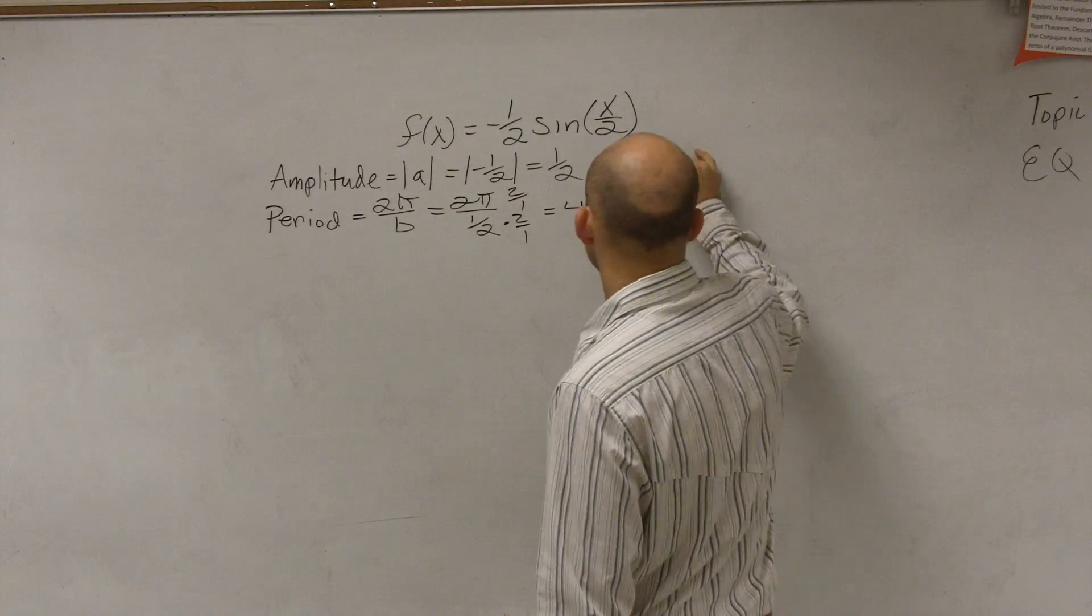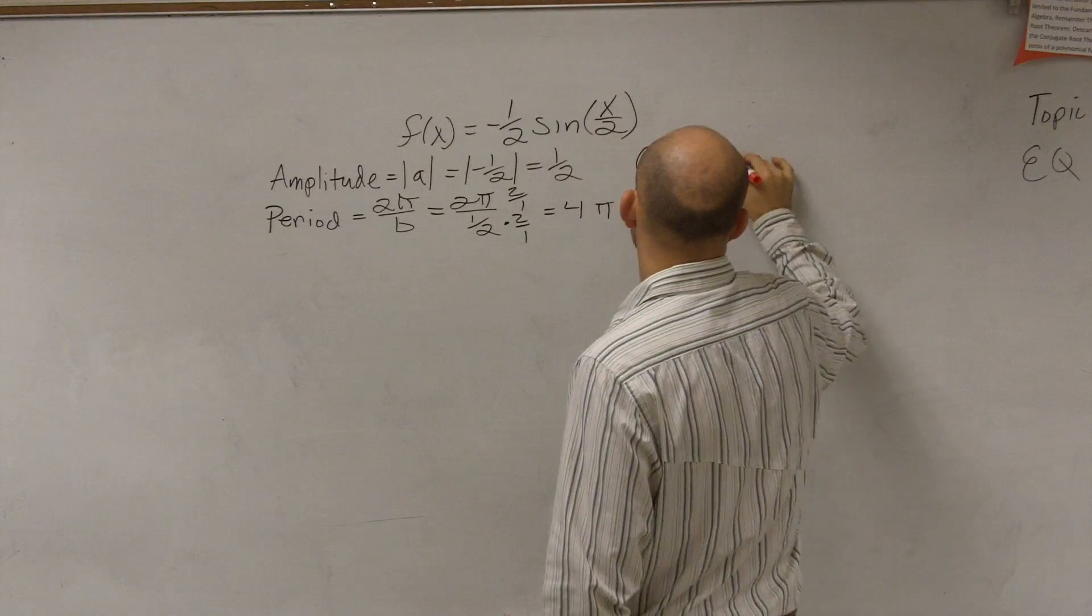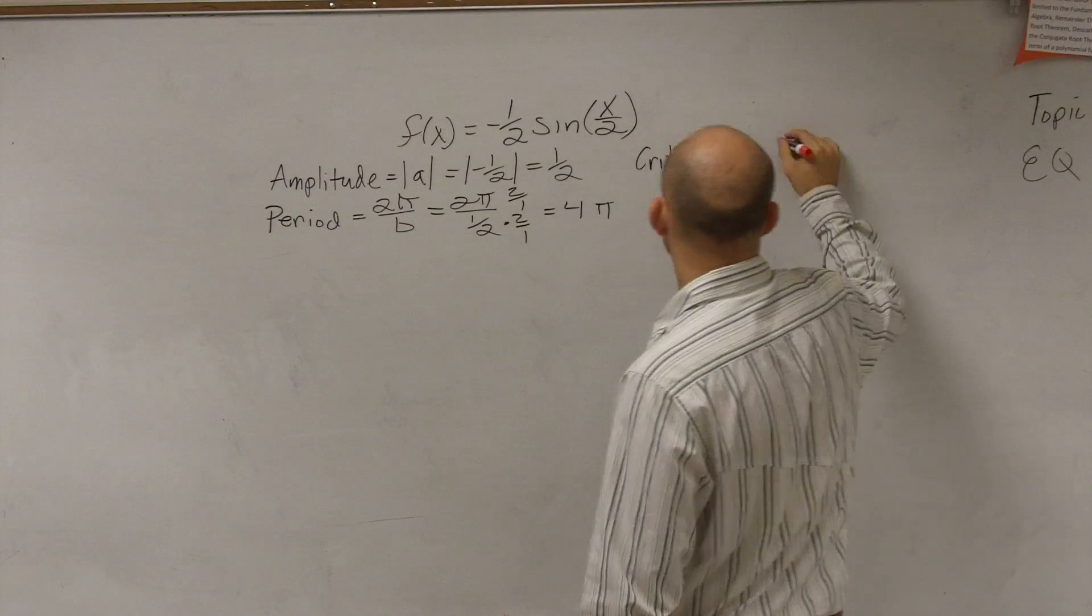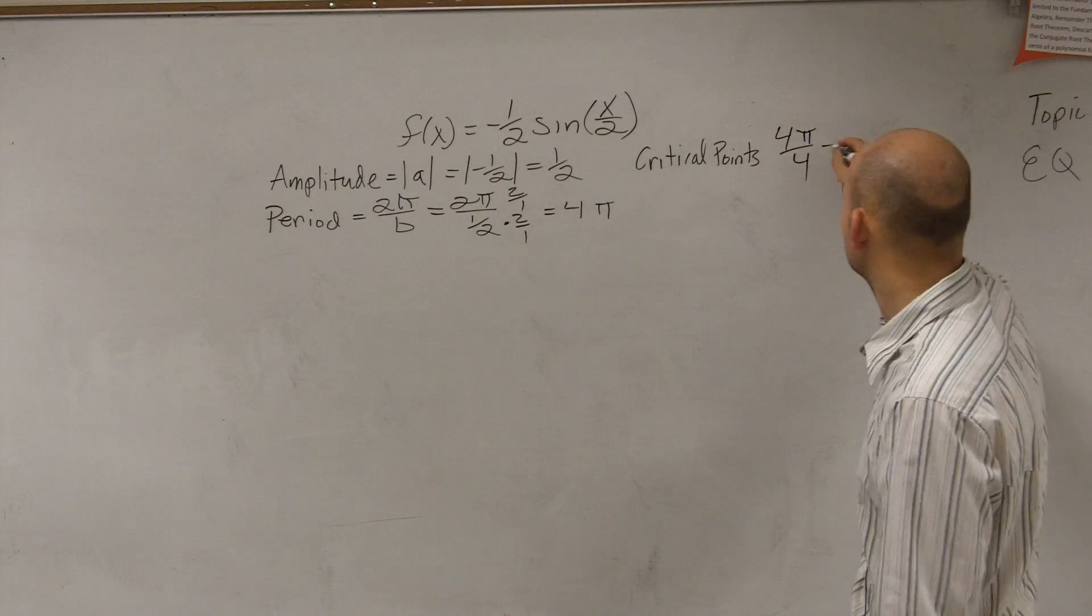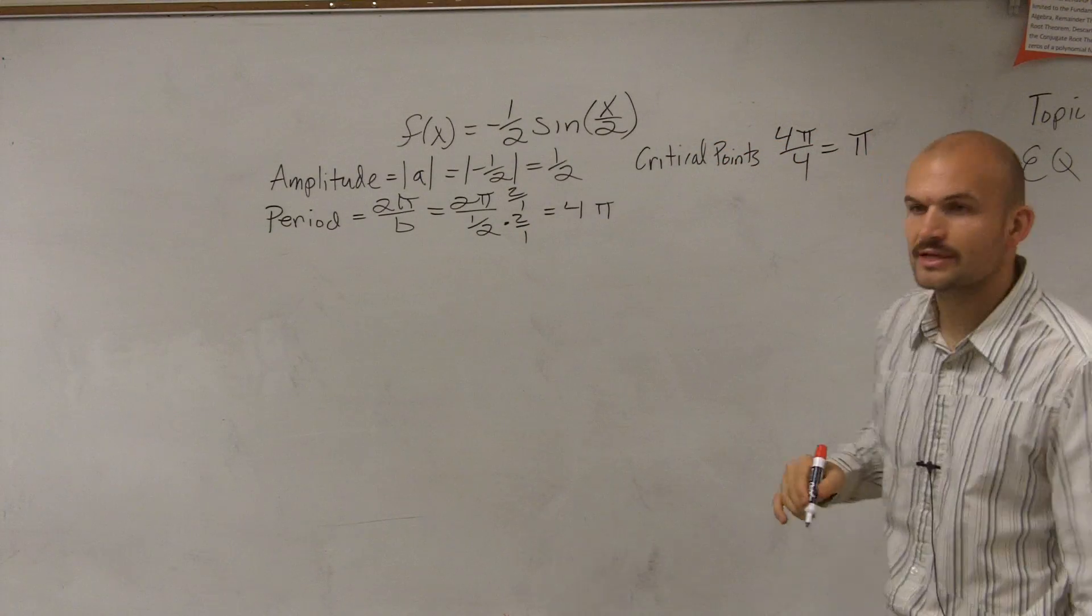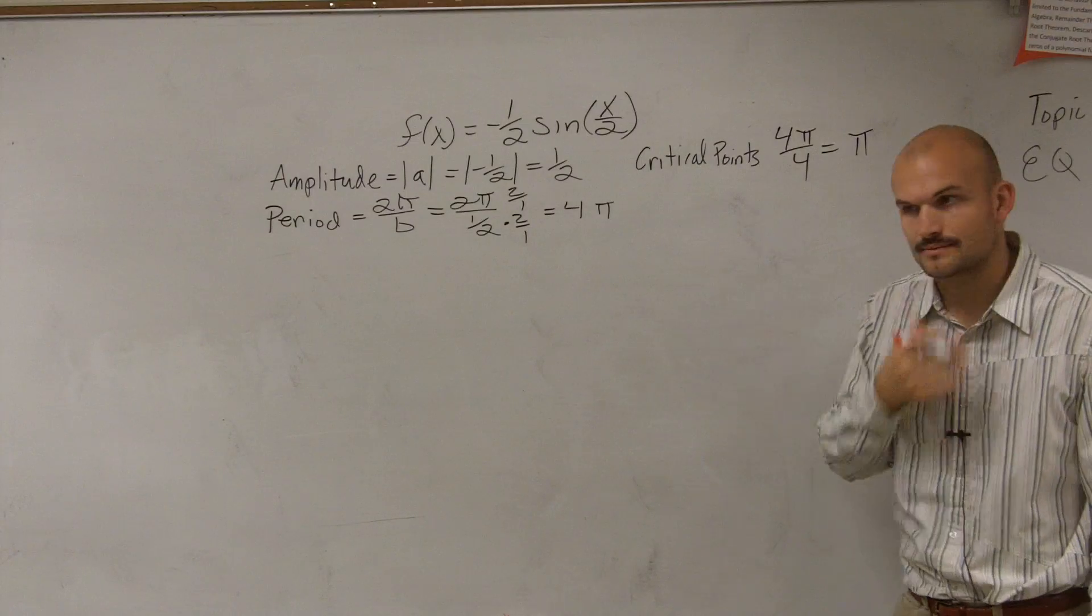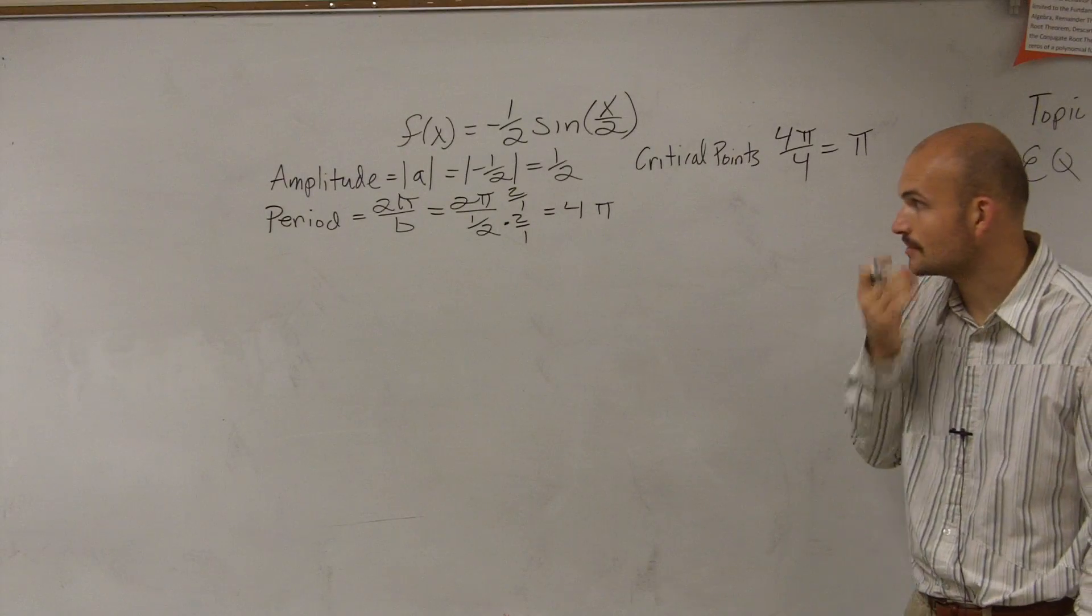So what I just label is I like to label my critical points. And to find the critical points, all you do is take your period and divide it by four. Therefore, my period is going to be π.